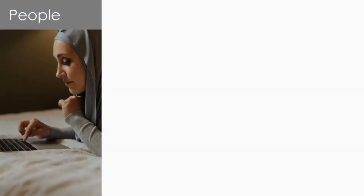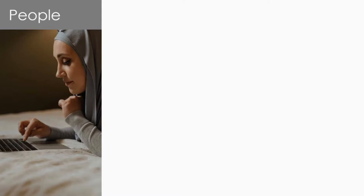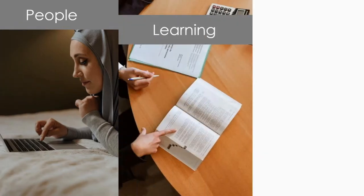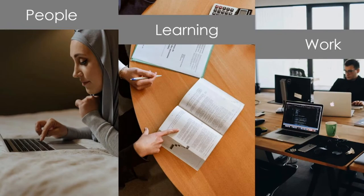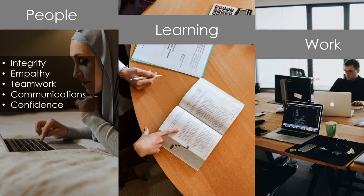Soft skills fall into three categories: competencies related to communicating and relating with people; how individuals approach continuous learning; and how they deal with work. These three components are the categories under soft skills.